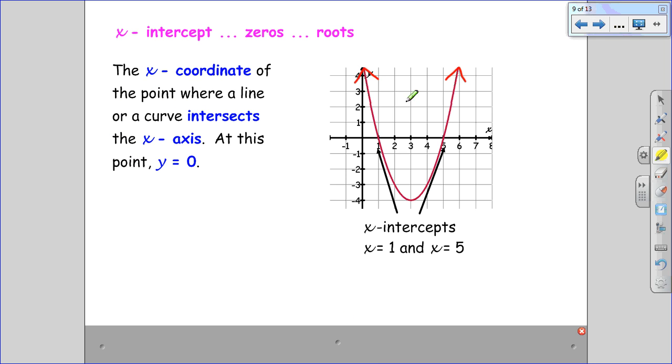X-intercepts. Those are the x-coordinates of the point where the curve, this red quadratic, crosses the x-axis. And you'll see we have two of them for this quadratic at x equals 1 and at x equals 5.